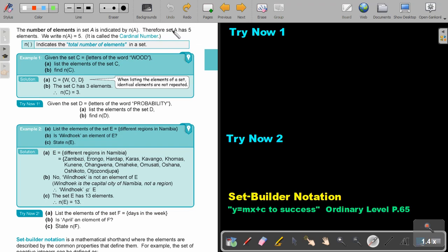The number of elements in a set A is indicated by N(A). Therefore, set A has 5 elements. We write N(A) as equal to 5. So, N stands for the number of elements. It is called the cardinal number. N brackets indicate the total number of elements in a set. Let's look at an example. Given that set C, the letters of the word would, list the elements of set C. Just remember, when we're listing the elements of a set, identical elements are not repeated. So, there's just a W, an O, don't write two O's, and one D. Find N(C). How many elements are there in the set? So, it's 1, 2, 3.